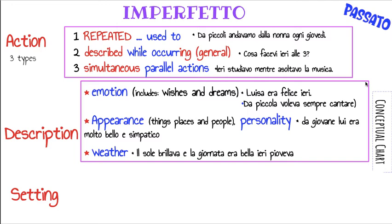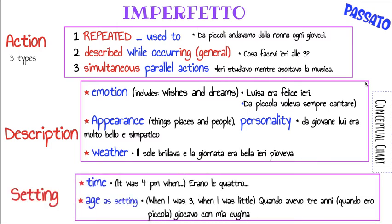Yesterday was a beautiful day. The category of weather could also be put into setting. Time — when you say 'it was four, when blah blah blah,' that becomes your setting, which is different. When you have a verb connected to the time, you will use the imperfect. Same with age: quando avevo tre anni, giocavo con mia cugina — I played with my cousin.